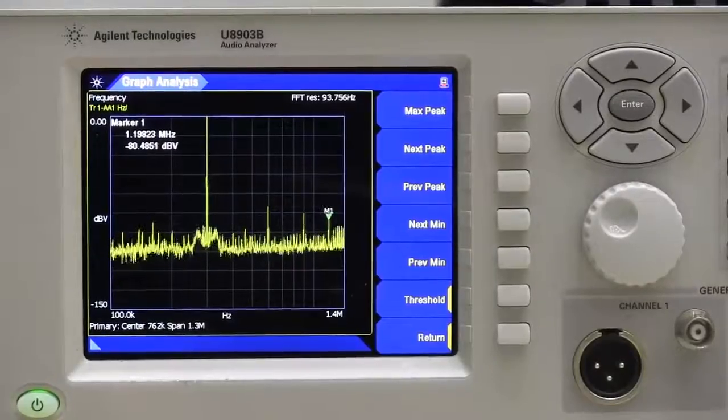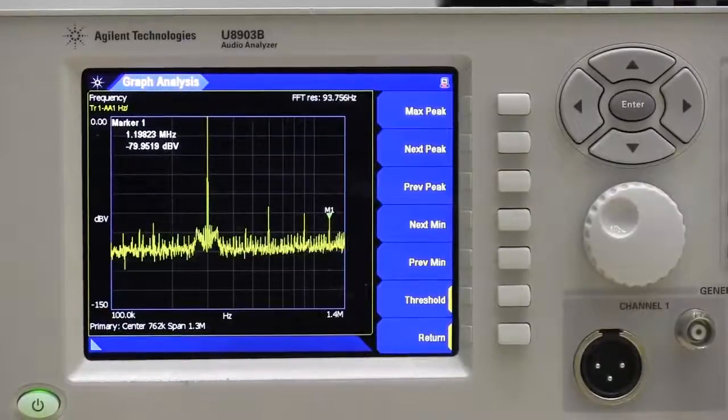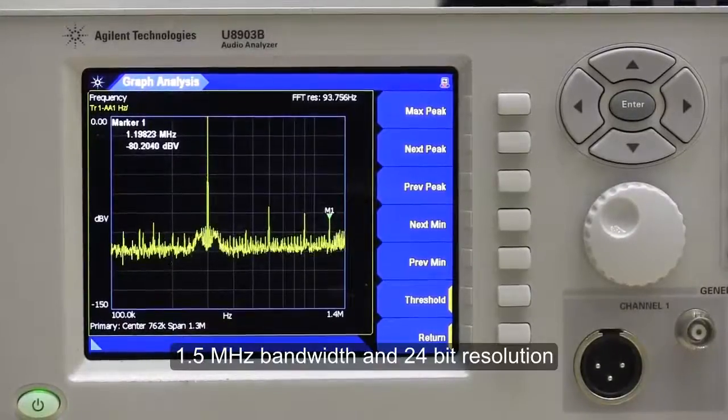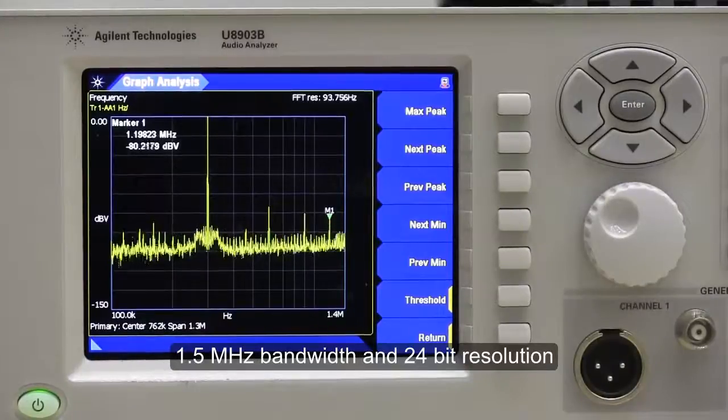For component and IC testing, the U8903B comes with a wide bandwidth option, expanding the upper limit of the measurement bandwidth to 1.5 MHz with a 24-bit resolution and 1 million point FFT.